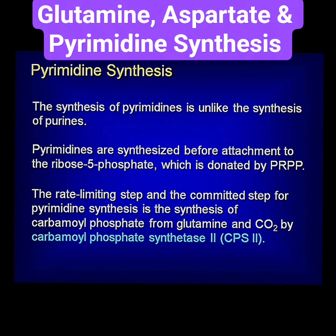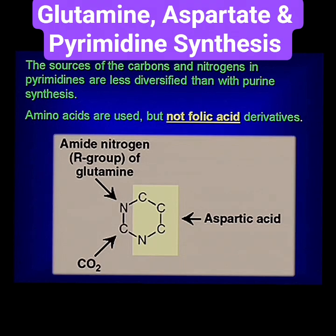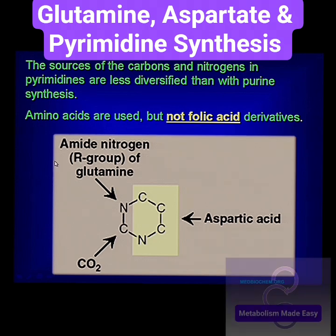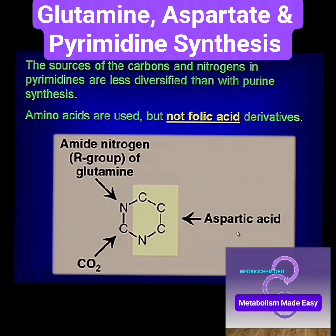Same as for purines, you want to focus on the rate-limiting enzyme — we'll talk about it in a minute. But you also want to focus on the contributing amino acids to the ring: aspartic acid and glutamine. Only two amino acids are needed.